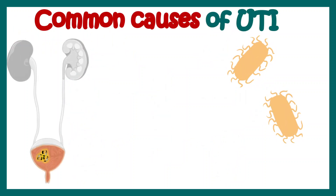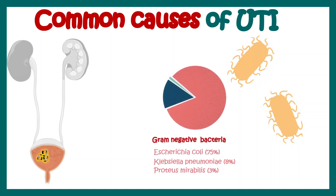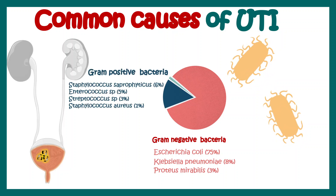Common causes of UTI involve bacteria, because most UTI cases are bacteria-borne. Majority of these bacteria are gram-negative, especially uropathogenic Escherichia coli which comprises 75% of them, Klebsiella, and Proteus mirabilis. There are also gram-positive bacteria which can cause UTI, such as Staphylococcus, Enterococcus, and Streptococcus — all associated with urinary tract infection.